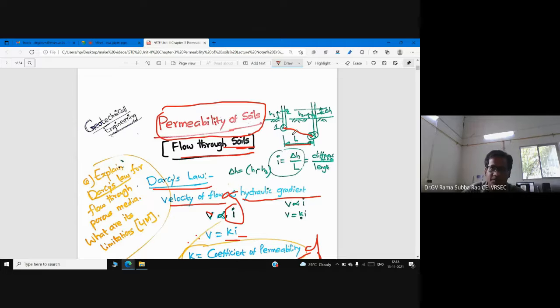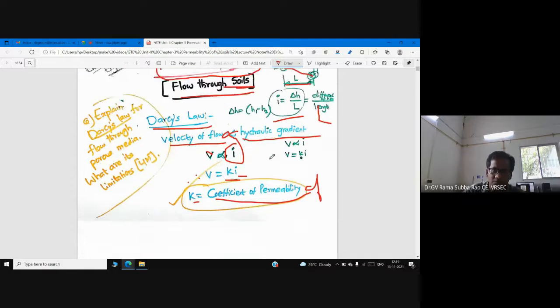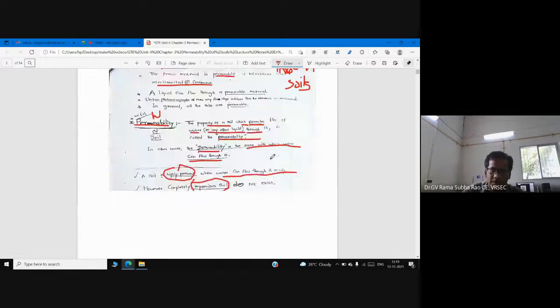So now the flow took place between one to two where there is a head difference h1 minus h2. That is the difference of head. So now I would like to say hydraulic gradient is equal to difference between head by two observations divided by distance between two observations, that we are trying to call as length. So I is equal to h1 minus h2 by L.